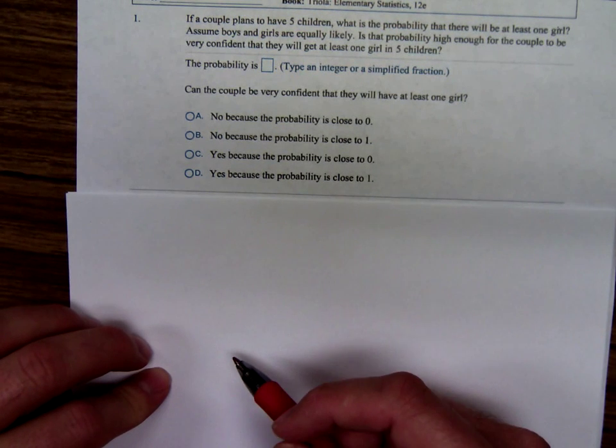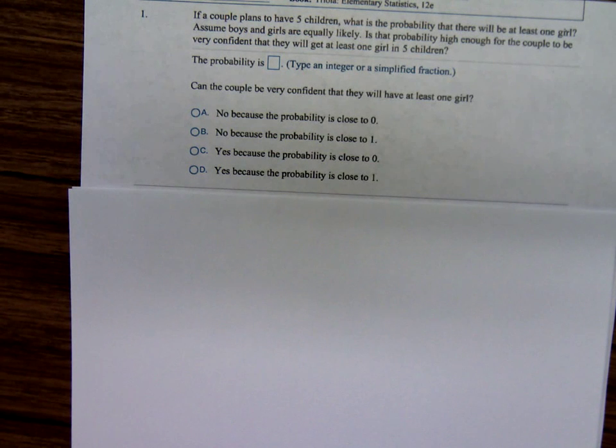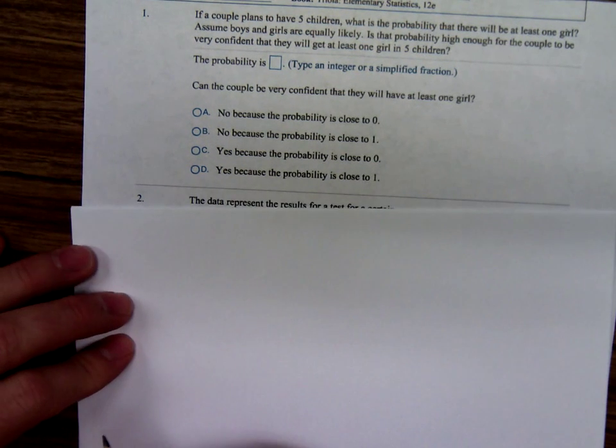This first problem, if a couple plans to have five children, what is the probability that there will be at least one girl?